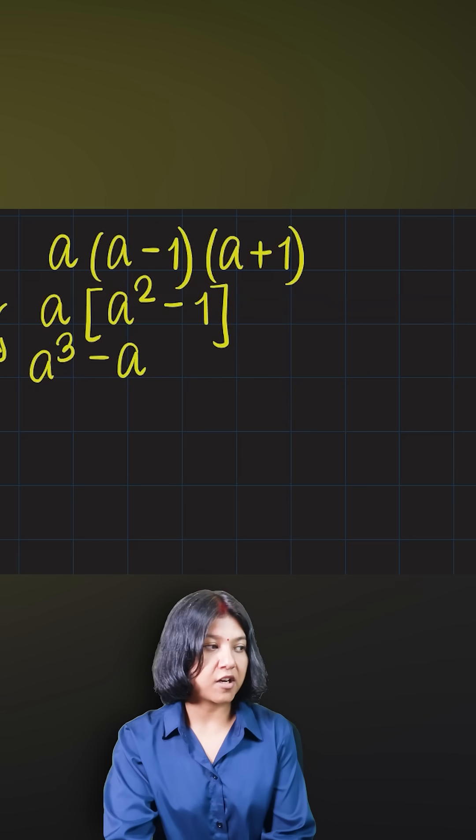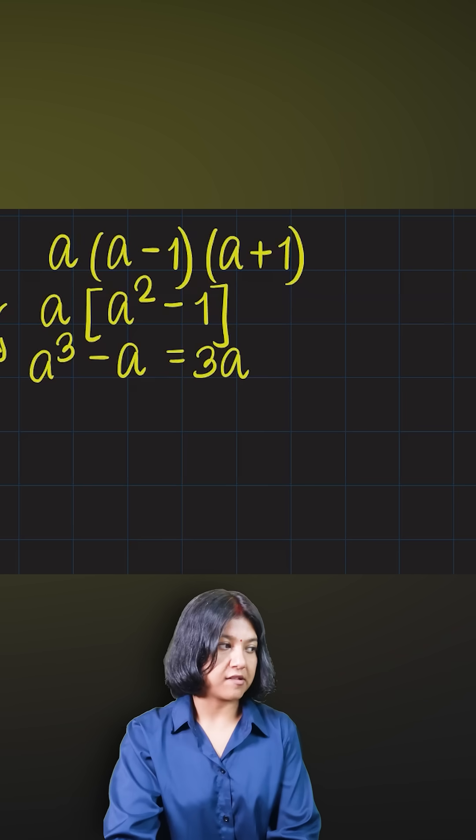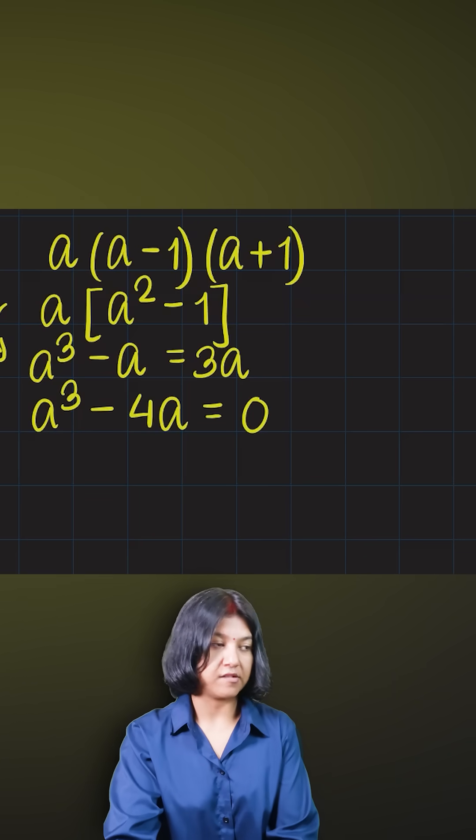Now according to the information, this product is equal to the sum. So what happens when you take this all to one side? You get a cube minus a minus three a, which is minus four a, which is equal to zero.